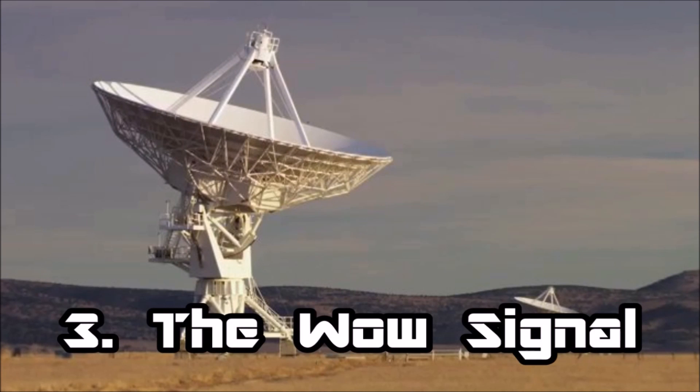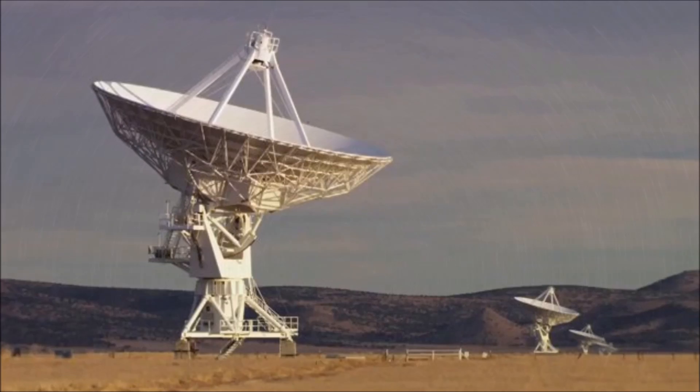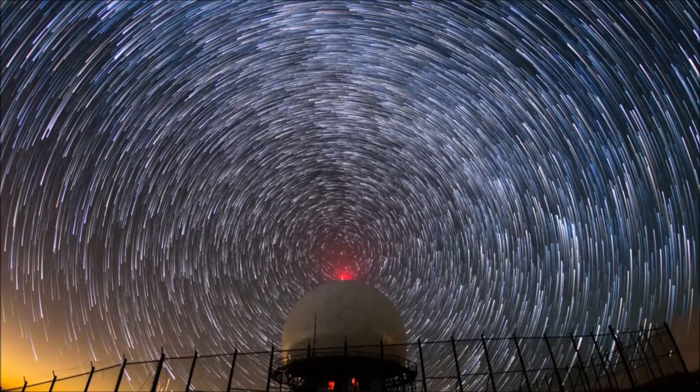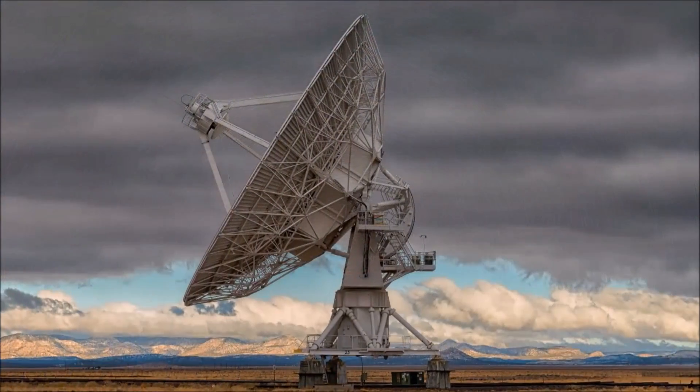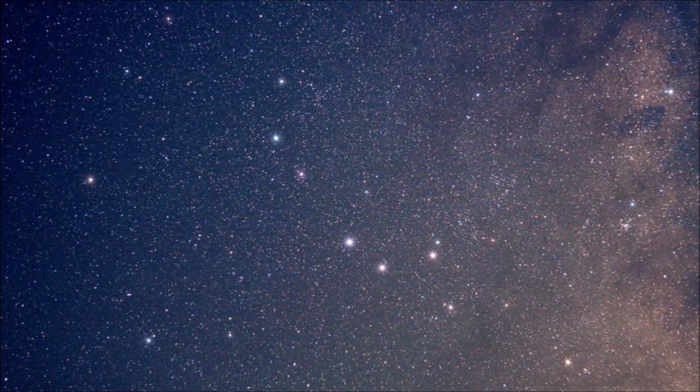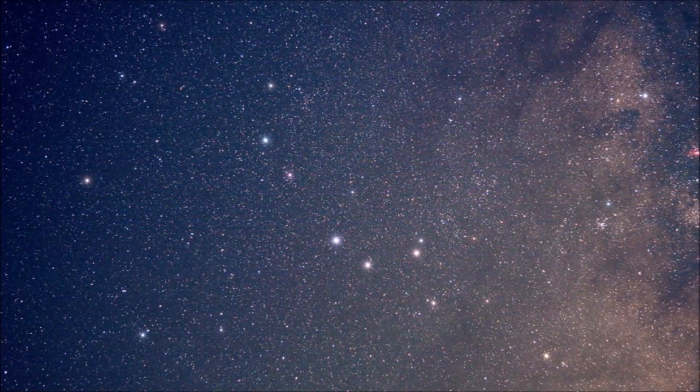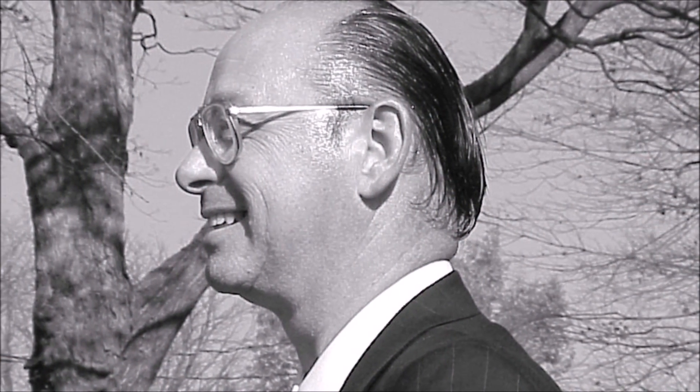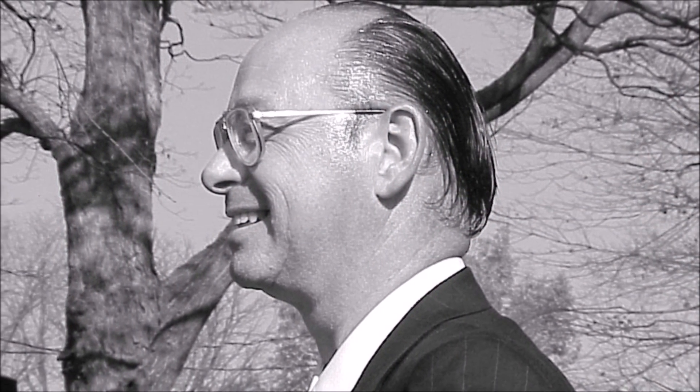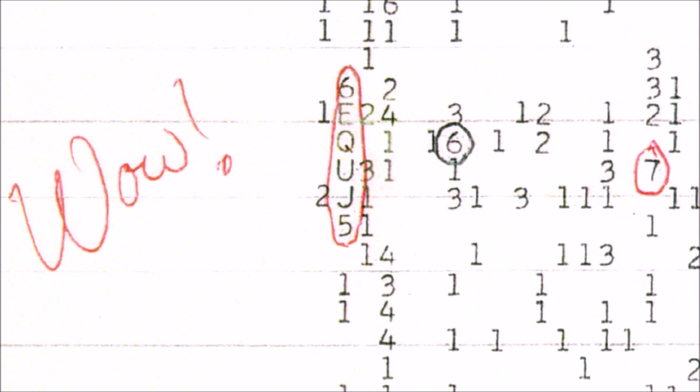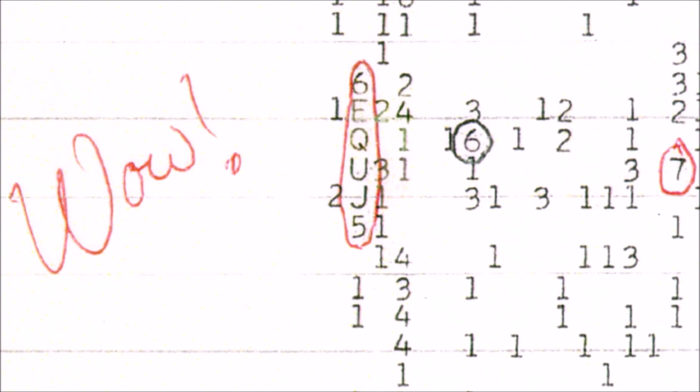Number three: The WOW Signal. On August 15, 1977, an extremely powerful radio signal was detected by Ohio State University's radio telescope. The signal appeared from within the constellation Sagittarius for 72 seconds, and displayed characteristics of an artificial radio signal. Astronomer Jerry Amen discovered the anomaly while looking over his recorded data a few days later. He was so impressed by the results that he circled the reading on the computer printout and wrote WOW, which is how the transmission received its nickname.